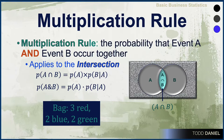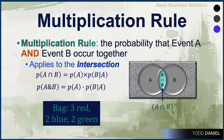Now we can talk about the multiplication rule. The multiplication rule gives the probability that event A and event B occur together — this applies to the intersection of two events. The probability of the intersection of two events is the probability of A times the probability of B given A.